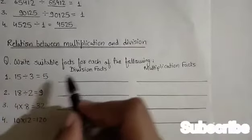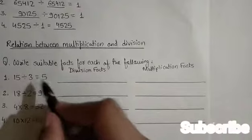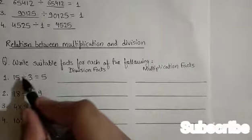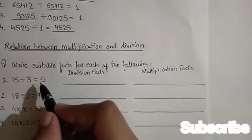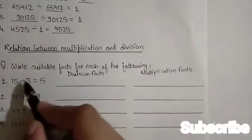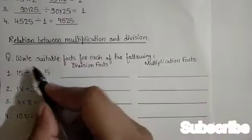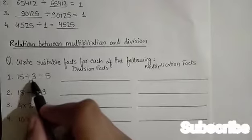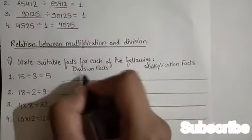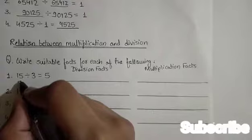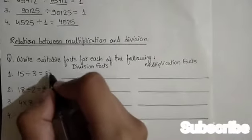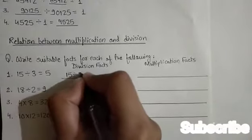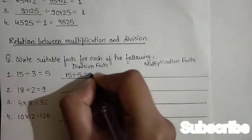15 divided by 3 equals 5. Ab humay is ke liye division fact aur multiplication fact likhne hai. 15 divided by 3 equals 5 is one division fact. So the other division fact is 15 divided by 5 equals 3.